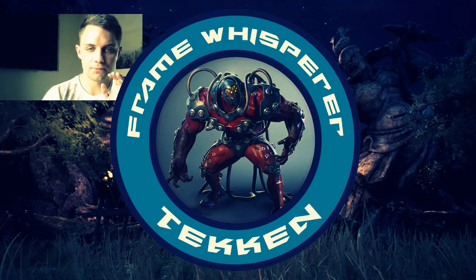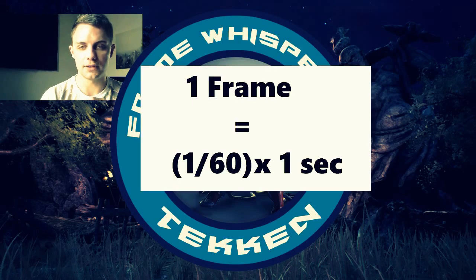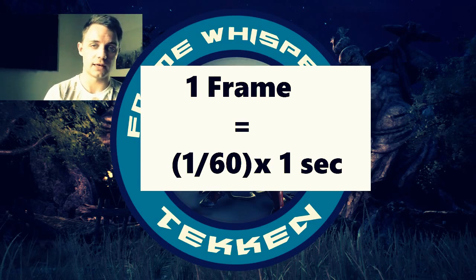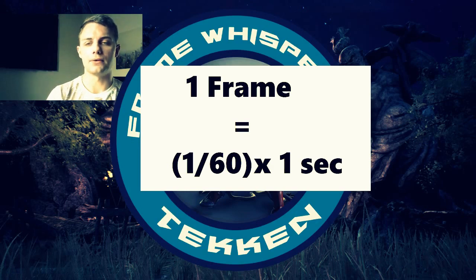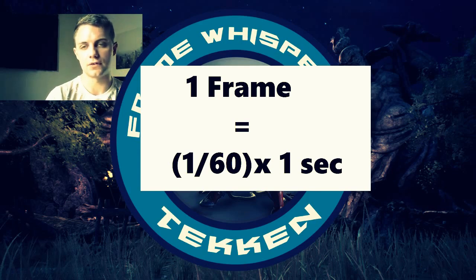Tekken runs at exactly 60 frames per second, and I made a graphic in MS Paint to illustrate this key point: in Tekken, one frame — one of these still images — is exactly equal to 1/60th of one second. That is what 60 frames per second means. So if I'm talking about 1 frame, I'm talking about 1/60th of a second. If I'm talking about a 10-frame move in Tekken, I'm talking about 10 out of 60 frames in one second, so 1/6th of a second. The one number you need to remember from this explanation: in Tekken, one frame is 1/60th of a second.